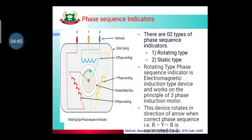In the rotating type phase sequence indicator, as seen in the diagram, there is a stator with a rotor in the center. A metal disc is mounted on a shaft, and three windings — R, Y, and B phase windings — are connected. This rotor rotates based on the working principle of a three-phase induction motor. The device rotates in the direction of the arrow when the correct phase sequence R-Y-B is connected to it.